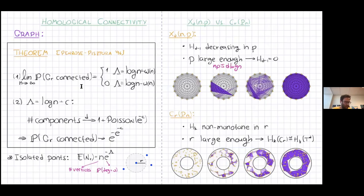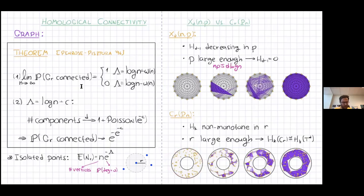You can see four snapshots of the complex as I increase the radius. As I increase the radius, I might create cycles: things get connected, and then adding more two-dimensional faces kills those cycles. In every dimension cycles can appear and then fill in later, so nothing here is monotone.